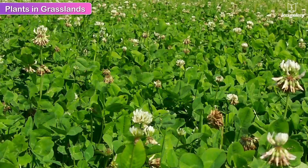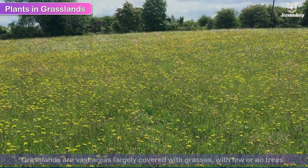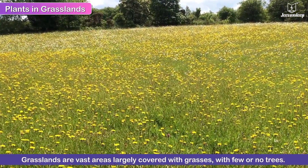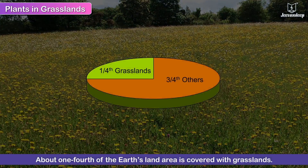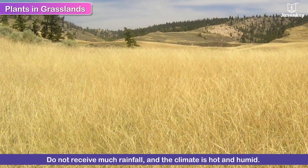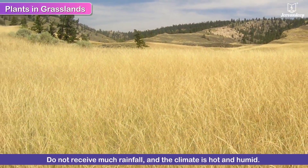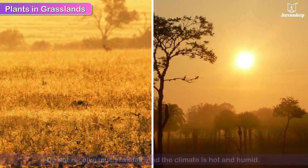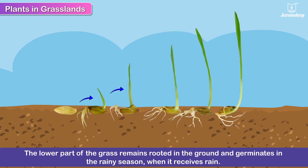Plants in grasslands. Grasslands are vast areas largely covered with grasses with few or no trees. About one-fourth of the earth's land area is covered with grasslands. These areas do not receive much rainfall and the climate is hot and humid. The lower part of the grass remains rooted in the ground and germinates in the rainy season when it receives rain.